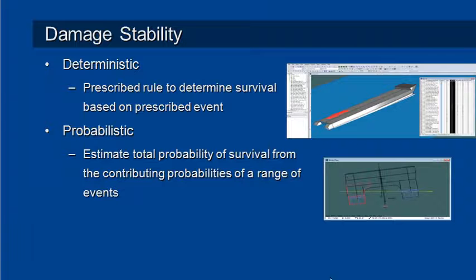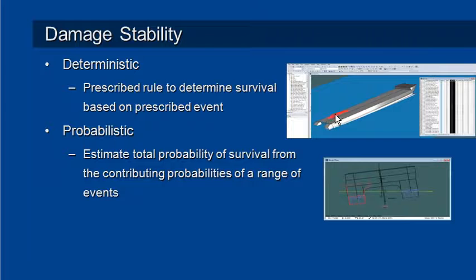Let's start with some terminology. Traditional damage stability is called deterministic damage stability. In this type of analysis we prescribe a rule to determine whether the vessel will survive based on a prescribed damage event. For example, the rule might specify a certain length of damage along the hull, and the criteria might be that the margin line should not be immersed, or something like that.